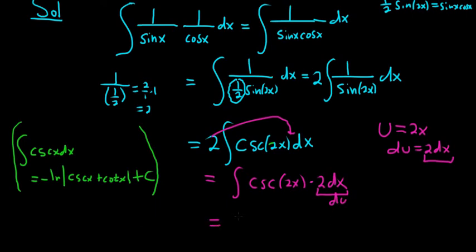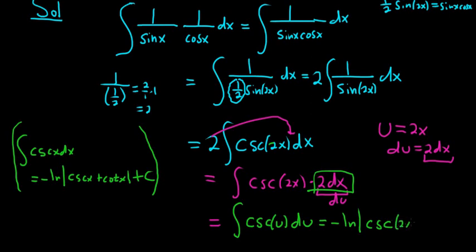So this will be equal to, we can change the variables now to u variables. This is the integral of cosecant and we said u was 2x, so that's just u. All this works out so nice. Did not think that would happen. Beautiful stuff. So this is just using the formula. Negative ln, absolute value, cosecant of u. Let's go ahead and skip a step here. U is 2x, we know that already, plus cotangent of 2x, and then plus our constant c.